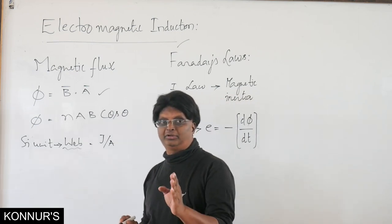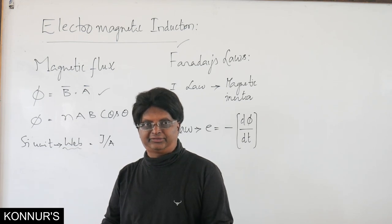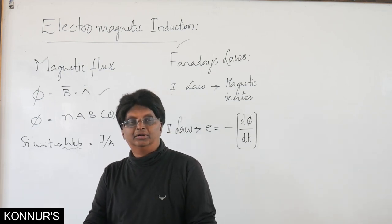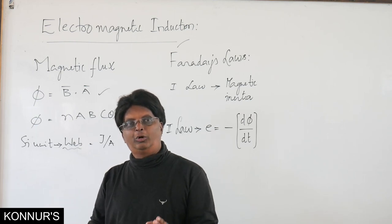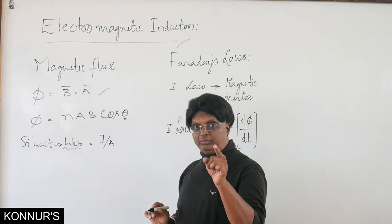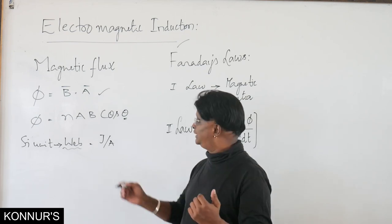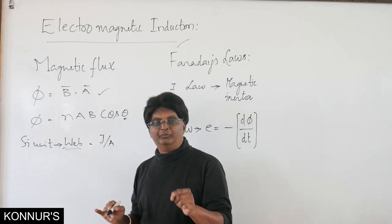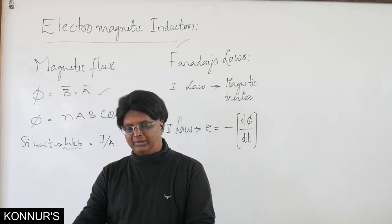Based on this definition, a conceptual question can be asked: for which orientation of a coil placed in a magnetic field is the flux maximum, and for which is it minimum or zero? The key is the angle θ — the area vector A⃗ is a pseudo-vector always taken as outward, and θ is the angle between B⃗ and the normal to the plane of the coil, not with the surface.